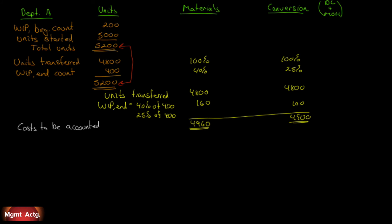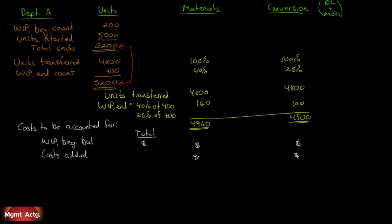Now we account for costs. We have a work-in-process beginning balance with a dollar value for conversion costs, a value for materials, and a known total beginning balance. During the period we add costs — we know the total conversion costs and total material costs even if we can't track them per unit. So we'll have a total for conversion costs, a total for materials, and a grand total.